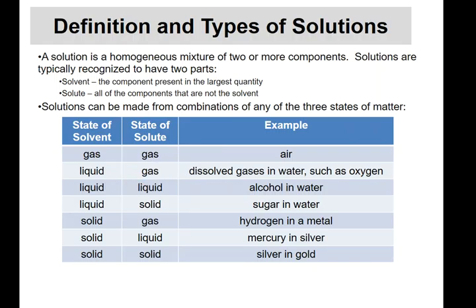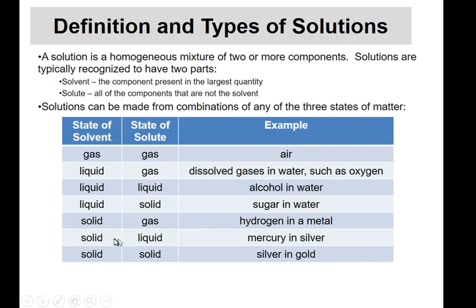A liquid in a liquid — an example is alcohol and water, blending two liquids together. A liquid solvent with a solid solute — that's our sugar-and-water or salt-and-water example. You can also take a solid solvent and dissolve a gas in it — for example, putting hydrogen into a metal under high pressure. And solid solvent with a liquid solute gives you things like mercury-silver amalgams used in teeth fillings.